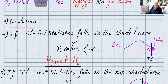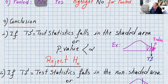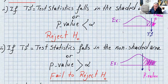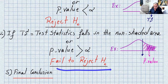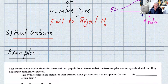Conclusion: same as before. If the test statistic falls in the shaded region, or the p-value is less than alpha, you say reject H0. If the test statistic falls in the non-shaded region, or the p-value is greater than alpha, you say fail to reject H0. The final step is stating either enough evidence or not enough evidence to support the original claim.